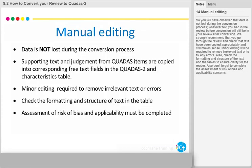You will have observed that data is not lost during the conversion process. Whatever text you had in the review before conversion will still be in your review after conversion. We strongly recommend that you go through the review and check that texts have been copied appropriately and still make sense. Minor editing will be required to remove irrelevant text or to fix any errors. Also, check the formatting and structure of the text and the tables to ensure clarity for the reader, and don't forget to complete the assessment of risk of bias and applicability concerns.